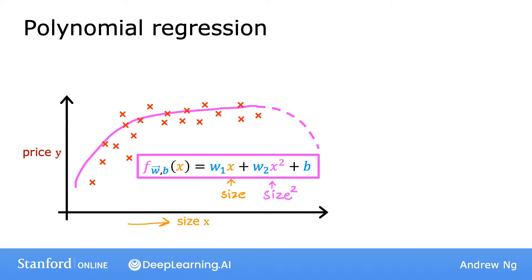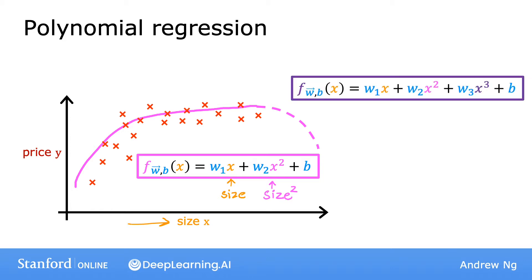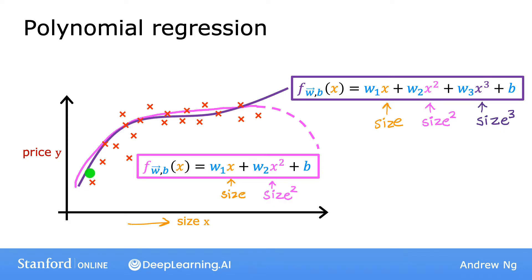Big houses seem like they should usually cost more. So then you may choose a cubic function, where we now have not only x squared, but x cubed. So maybe this model produces this curve here, which is a somewhat better fit to the data because the size does eventually come back up as the size increases.